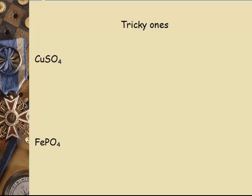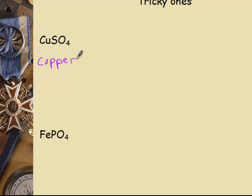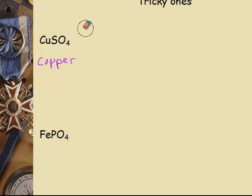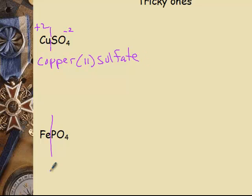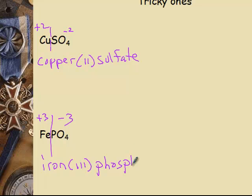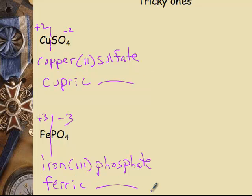Trickier ones — figuring out the correct Roman numeral. Copper: the common mistake is people bring that four subscript up and say plus four, but that's not right. Remember, this is two halves of an ionic substance — the positive ion and the negative ion. If I had four sulfates, I would show parentheses with four. What I have is one copper and one sulfate. Sulfate is a minus two, so copper must be a plus two to balance the charges — copper two sulfate. Phosphate is a minus three, so iron must be a plus three — iron three phosphate. We could call the copper compound cupric sulfate, and the iron compound ferric phosphate.